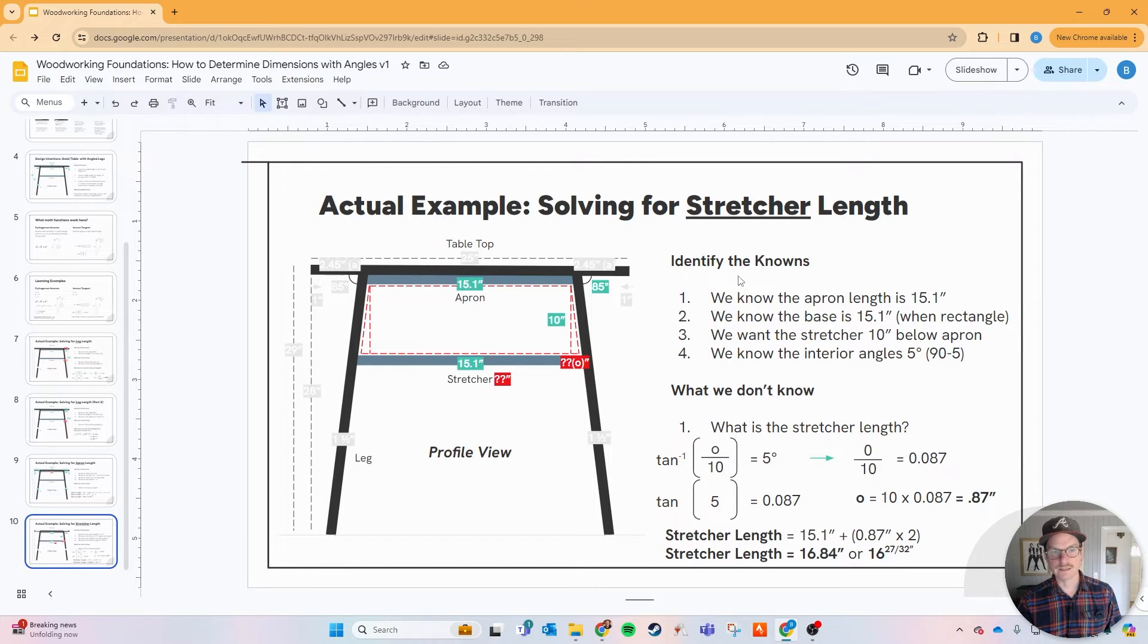Now how about the stretcher? This all depends on how far down you want to make your stretcher go. In this case I want it to be 10 inches. Let's work with all the knowns that we have here. We know that the apron length is 15.1 inches. We know the base is 15.1 because when I make a rectangle at 90 degrees, it now becomes a rectangle, and we want the stretcher to be 10 inches below the apron. Now that we got part of this triangle here, we're doing the exact same steps that we did on the legs to get out those dimensions.